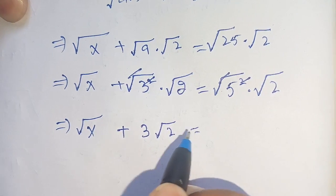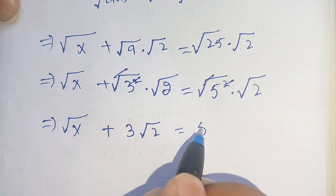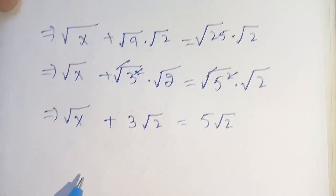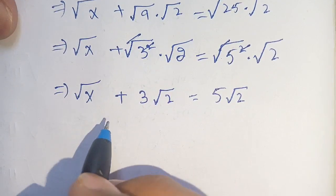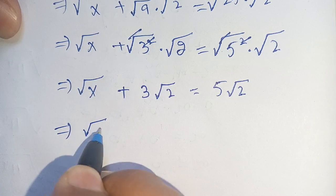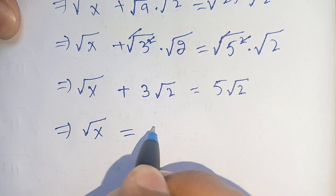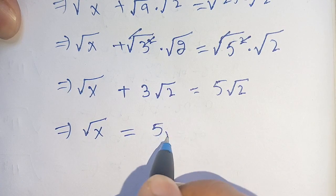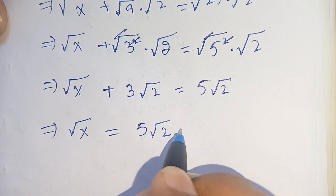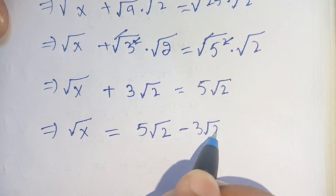In the next step we isolate the unknown: square root of x is equal to 5 times square root of 2 minus 3 times square root of 2.